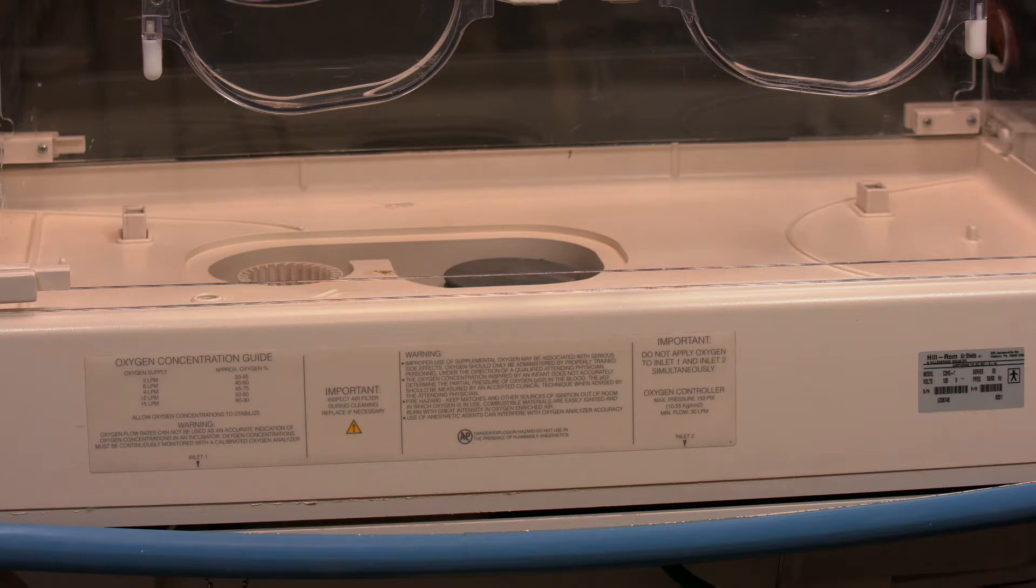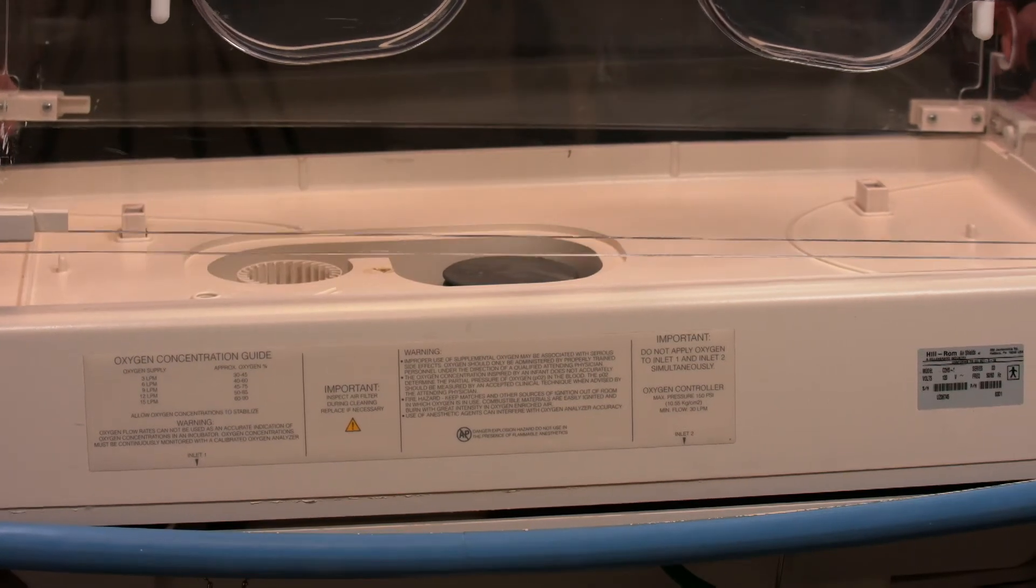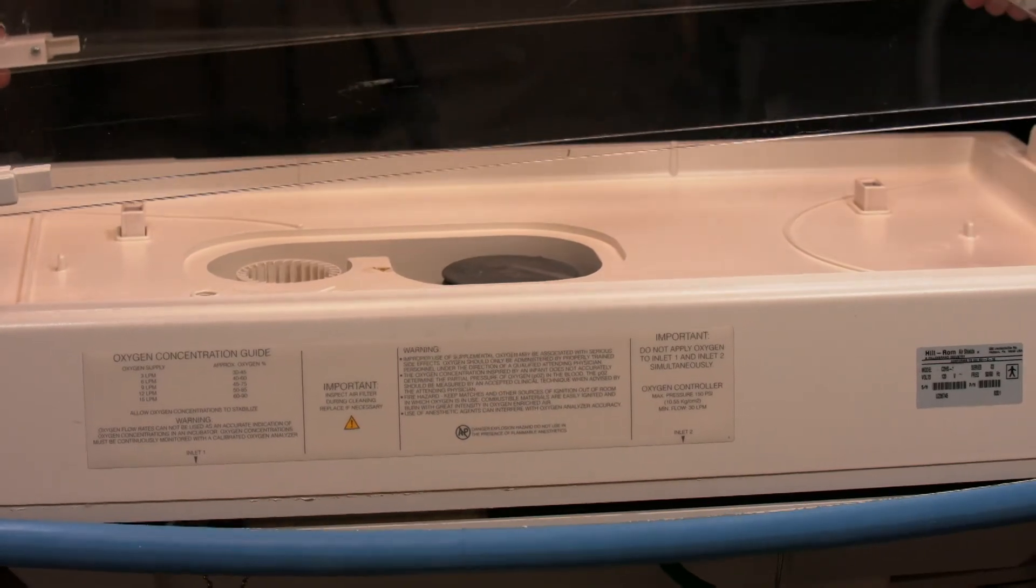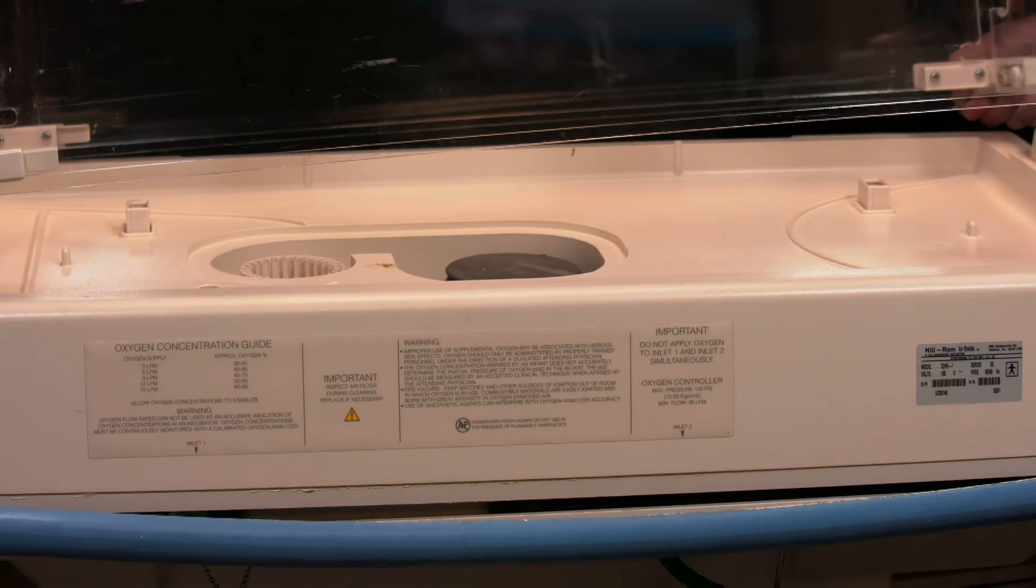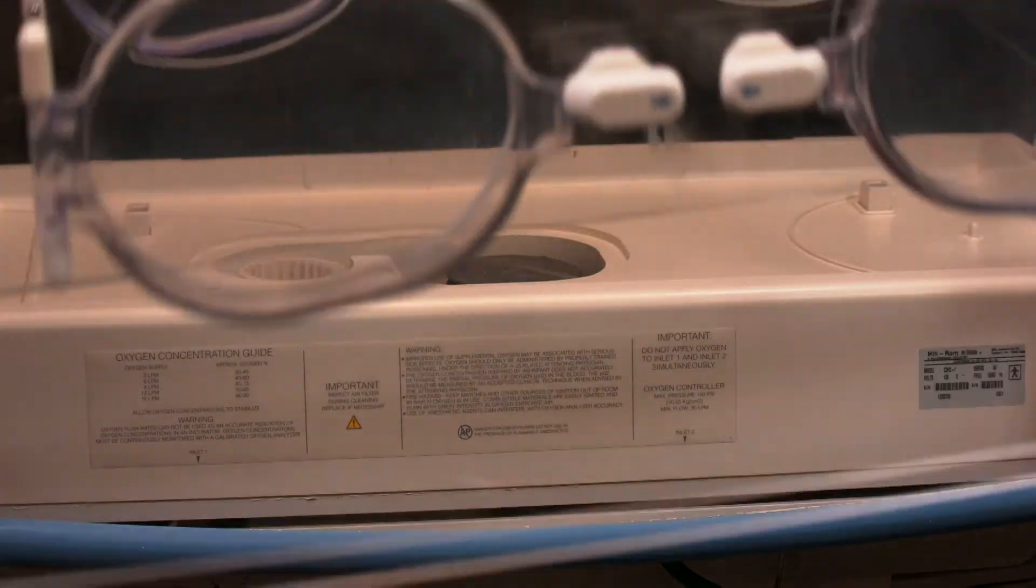The first thing you've got to do to get inside the infant incubator is to take off the incubator casing. The way you do that is you lift it up. There is a latch on one side that you need to unhook. And then you can just lift it off. There we go. And you can just put it away.